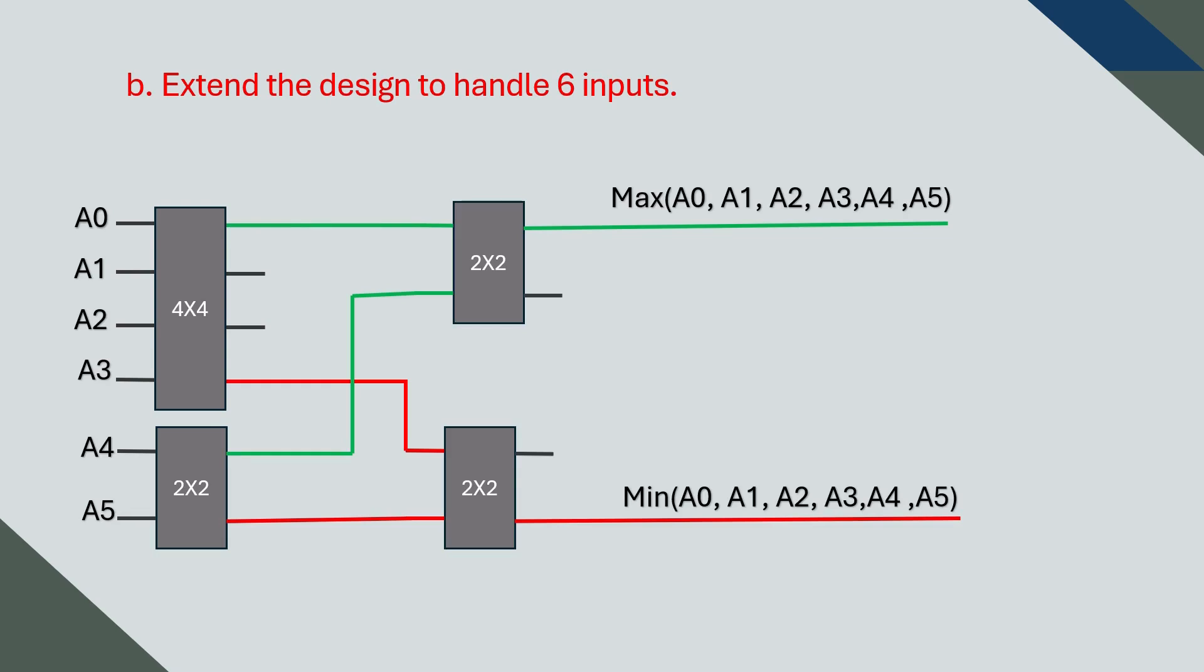Just like before, we take the maximum values from the sorters and feed them into another two-on-two sorter. This gives us the absolute maximum. We do the same with the minimum values to find the absolute minimum. Now we have locked in the smallest and the largest value from all six inputs.